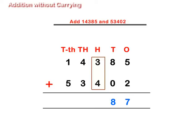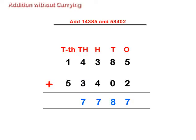Then at the 100's place, we get 3 plus 4 is equal to 7. Then at the 1000's place, we get 4 plus 3 is equal to 7. And lastly at the 10,000's place, we get 1 plus 5 is equal to 6.